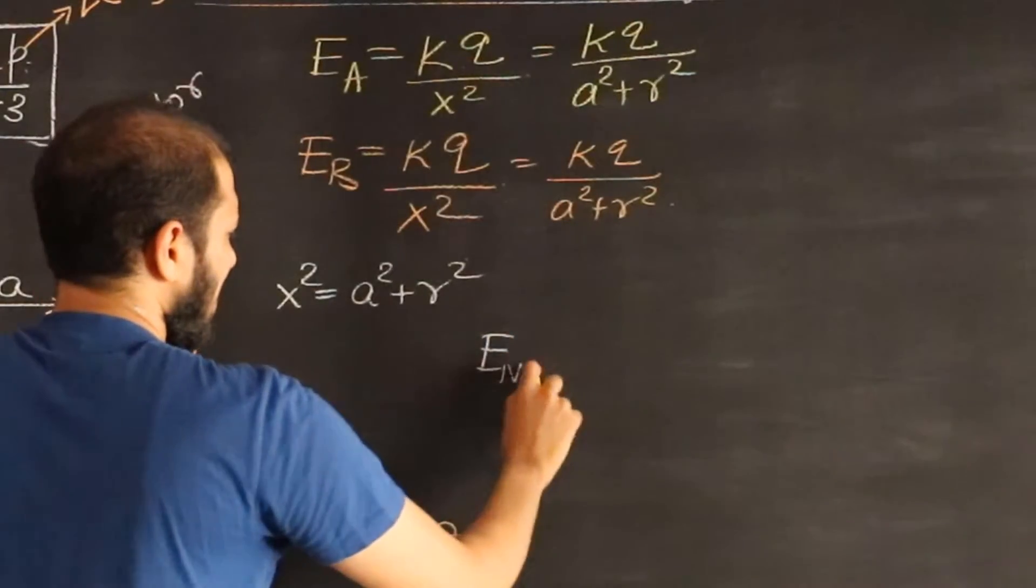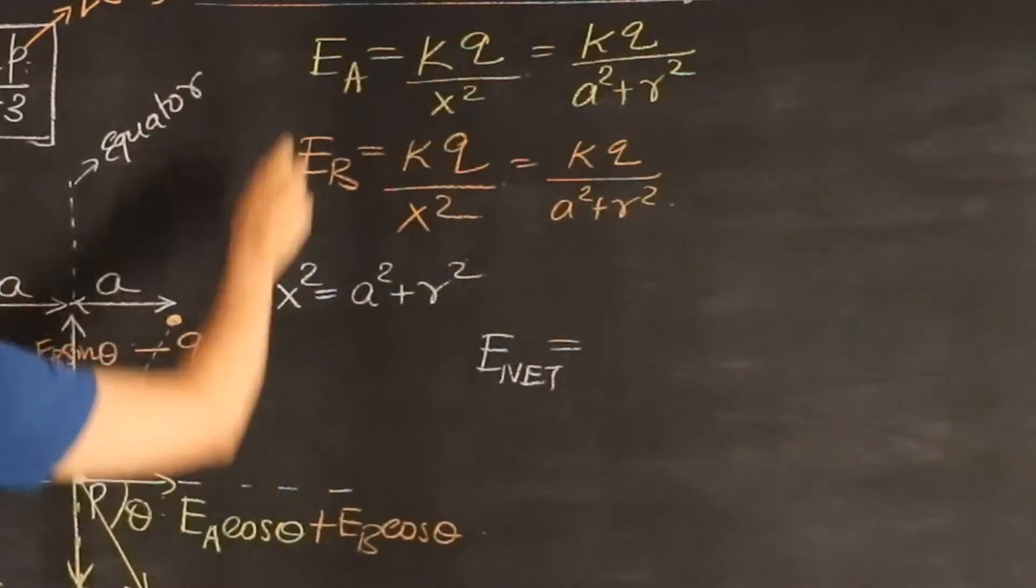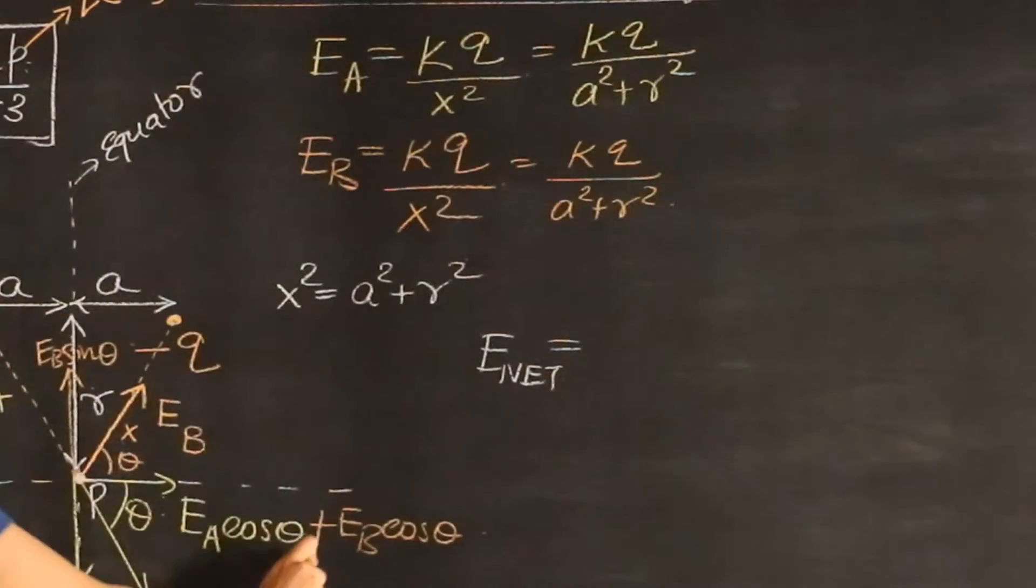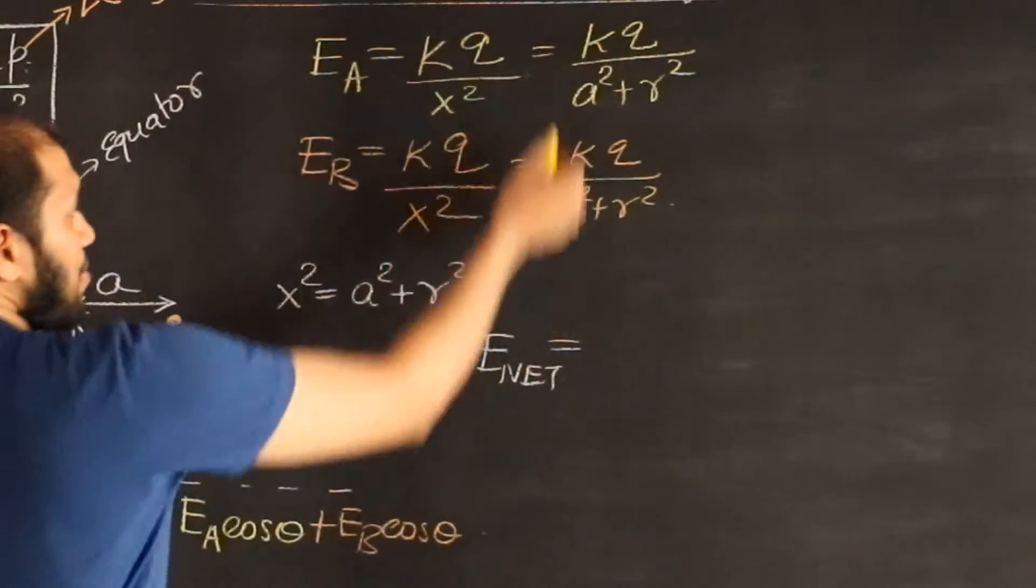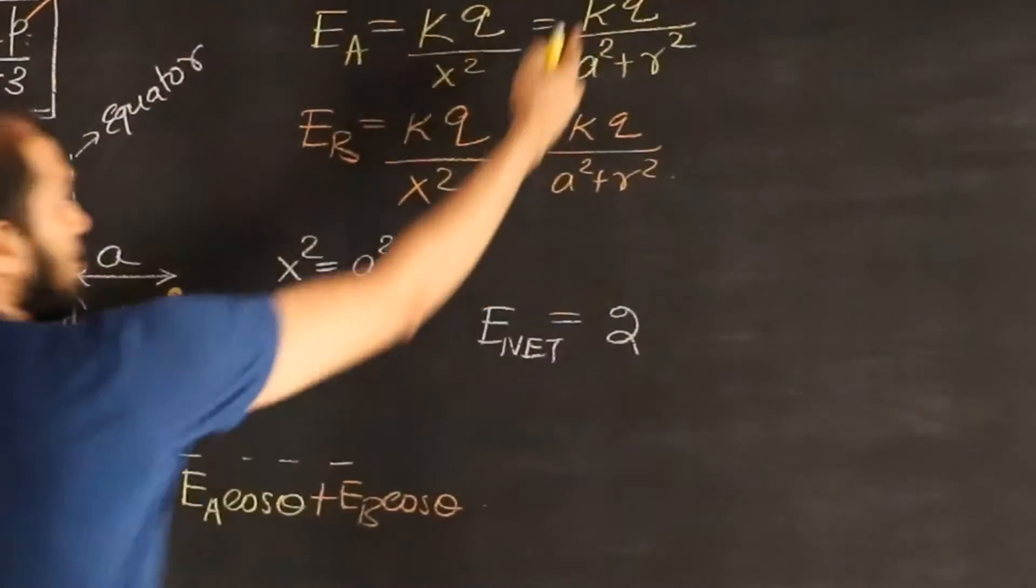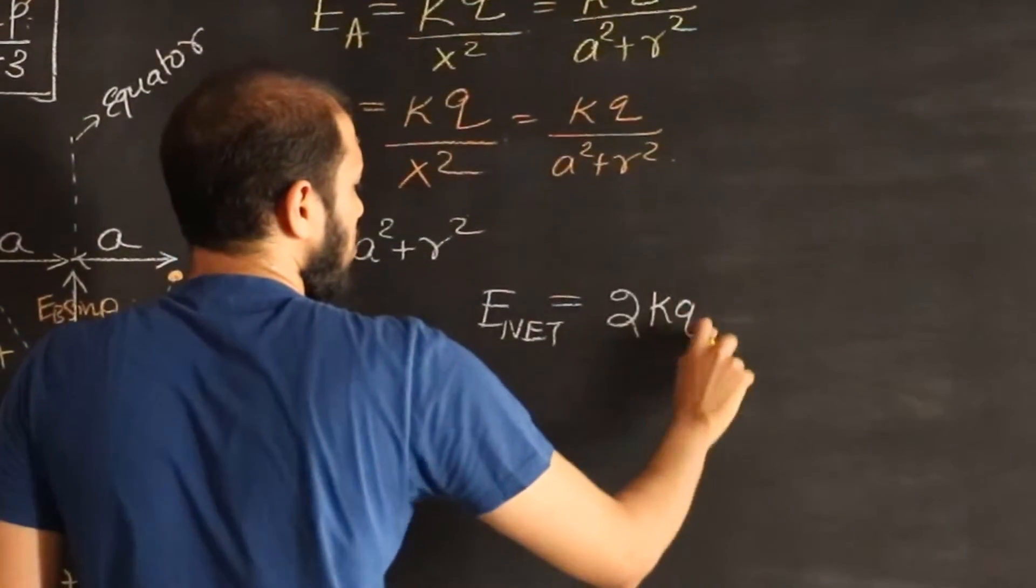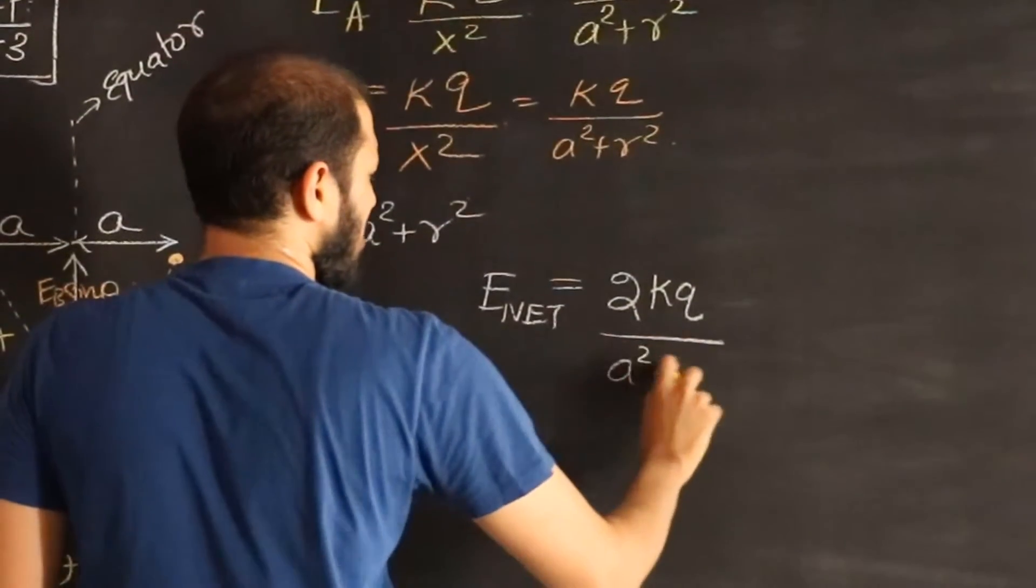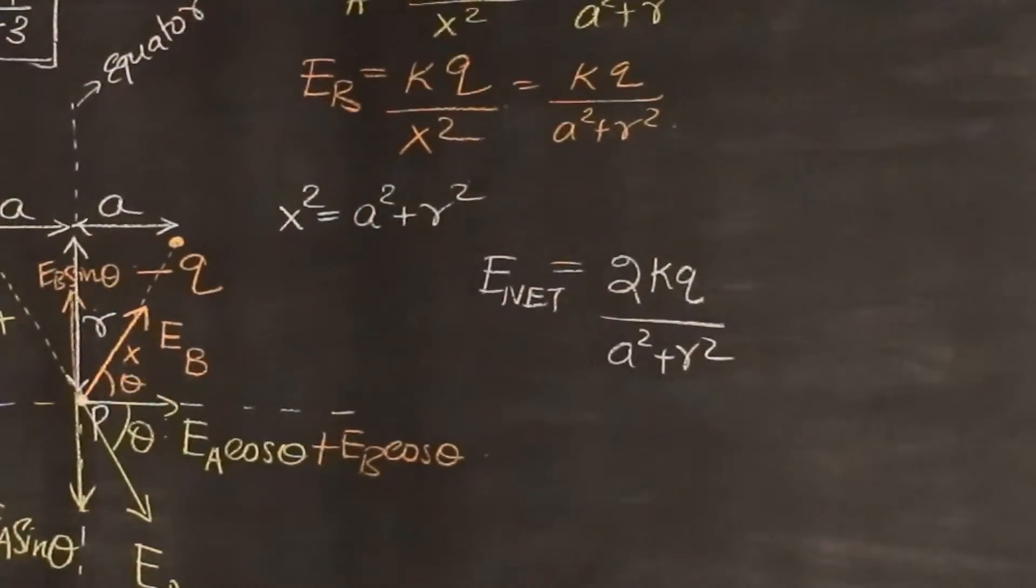So the total electric field, or the net field, is going to be EA cos theta plus EB cos theta. But EA and EB are the same thing, so it's just going to be two EA (or EB, one of them): KQ divided by A square plus R square times cos theta. Or that will be 2KQ divided by A square plus R square times cos theta. Well, we need to figure out what cos theta is.